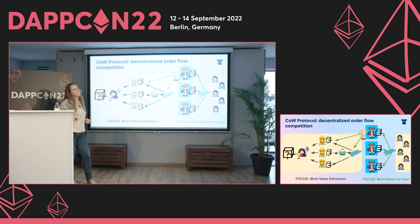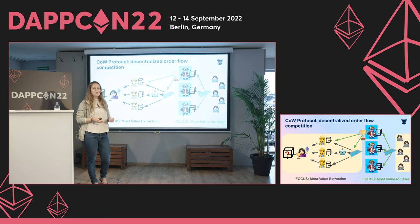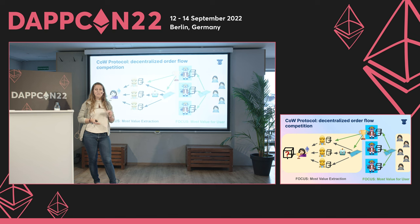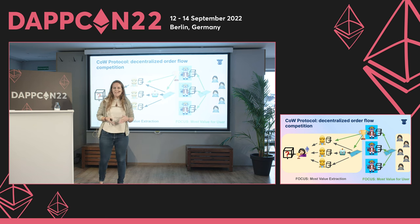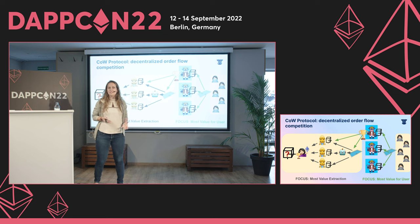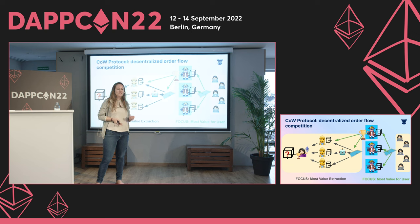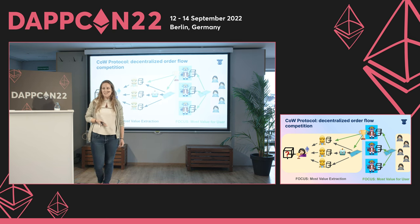Once the CoW builder wins and is responsible for submitting the transaction on-chain, the user price is secured. If any negative externalities like MEV happen, it is taken from the CoW builder, but the price provided to the user is secured. You cannot expect an average user to know the best way to submit transactions on-chain, but CoW builders are specialized parties who know exactly how to deal with the on-chain environment.